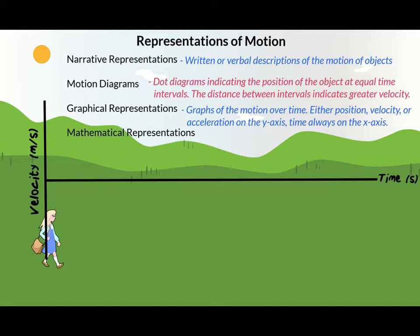What would acceleration look like on a VT graph? Remember, velocity is changing displacement over time, and acceleration is changing velocity over time — so acceleration tells us how quickly velocity changes. An acceleration of 10 meters per second squared means that the velocity of the object is changing by 10 meters per second every second that it's moving.